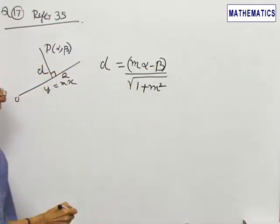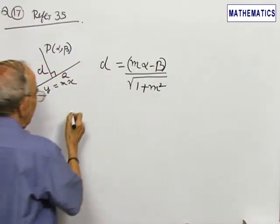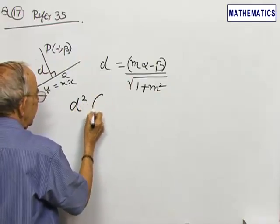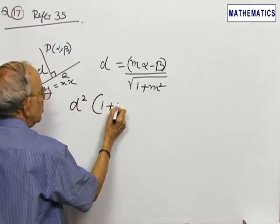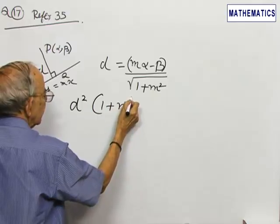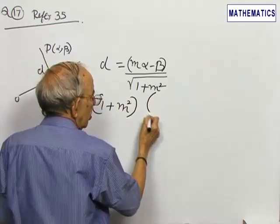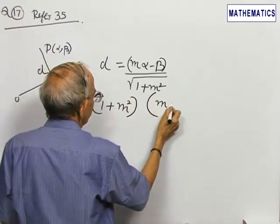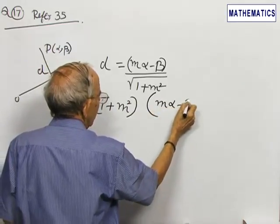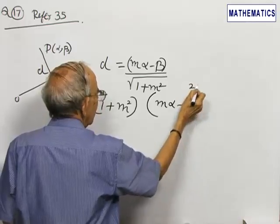Square and cross multiply. D square into 1 plus m square is equal to m alpha minus beta whole square.